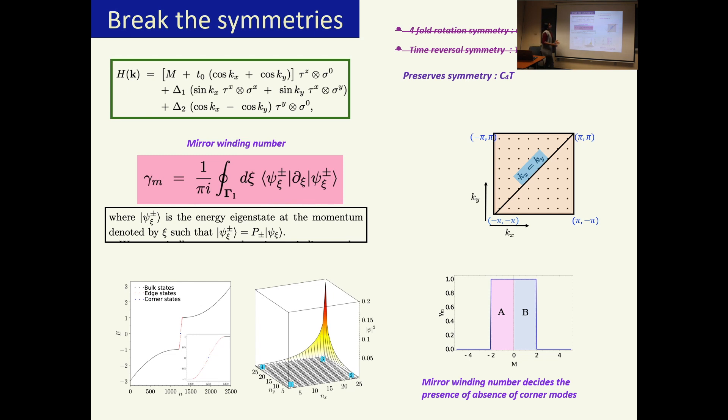Now what happens if we add a term that breaks the symmetries that I talked about? We add a term that looks like that and this basically breaks the symmetries in the following way: it no longer preserves the C4 symmetry, it breaks the time reversal symmetry, but it preserves the product of these two symmetries.